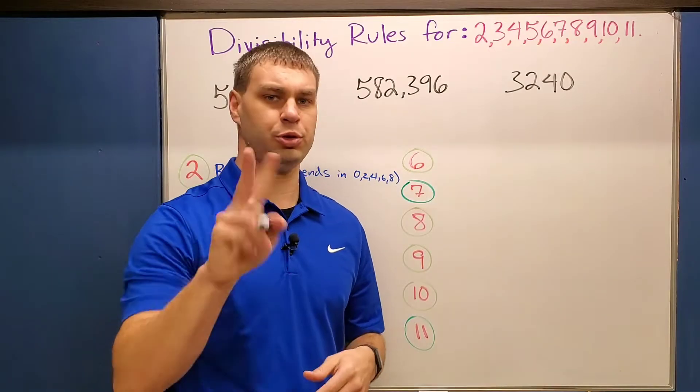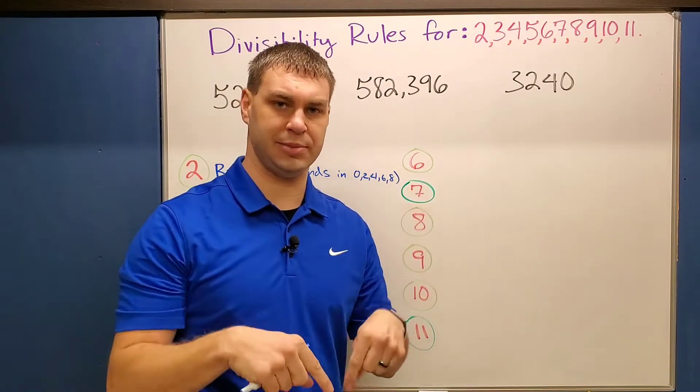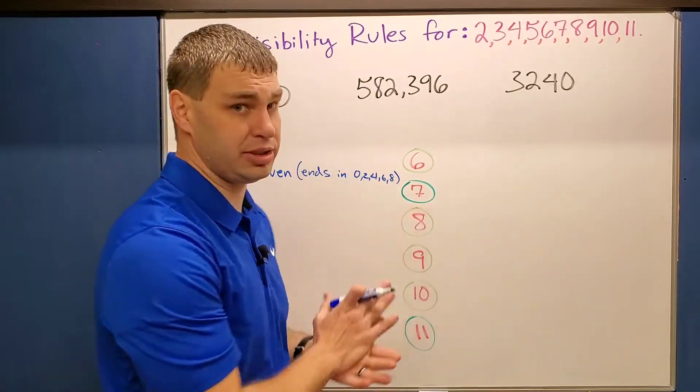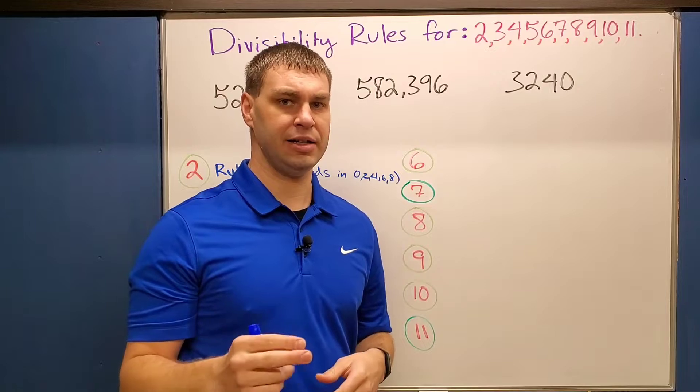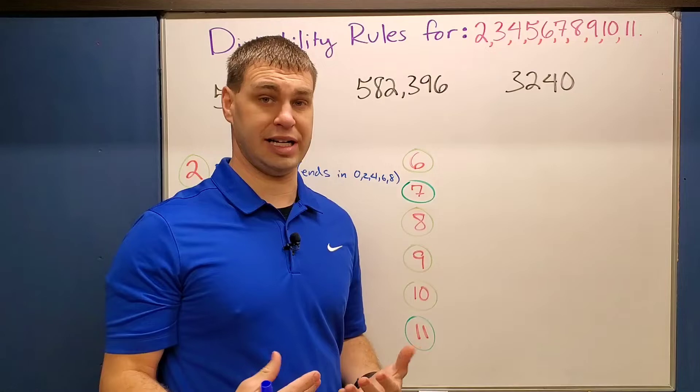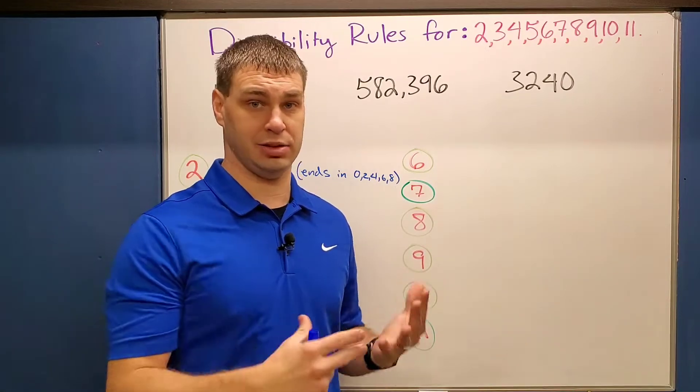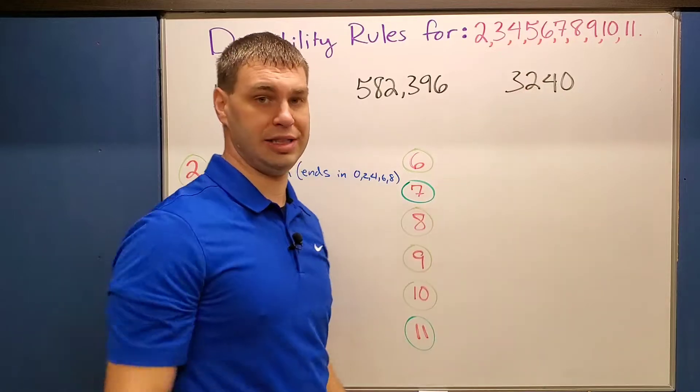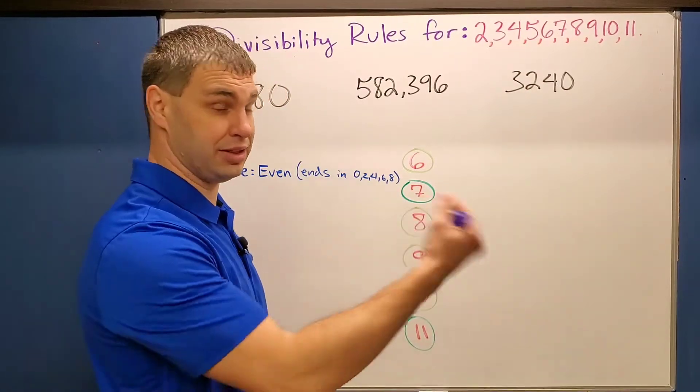Before we dive into our first rule, two quick things I need to tell you. One, there are timestamps in the video player down below, so drag it to whichever one you need. If you need a particular number, you can do that. And secondly, two of these are really weird, number seven and 11 to find their divisibility rules. Those are in a separate video because they would take way too long for this one. So you can check out this card up here. That'll tell you all you need to know about the divisibility for seven and 11.